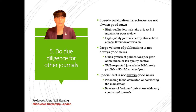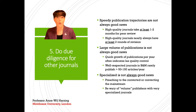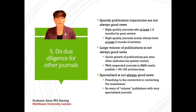Secondly, consider the volume of publications. More articles mean bigger chances of acceptance, but it also usually means lower quality standards. In business and management, most high-quality journals publish between 50 and 150 articles a year, perhaps 200 to 250, but generally not more. If you're looking at a journal publishing 500, 600, or even 1,000 articles a year, that's a sign to look more closely to ensure they uphold quality standards.